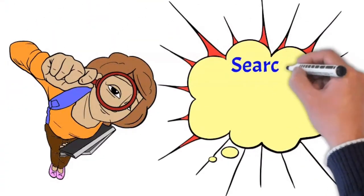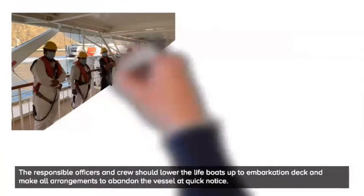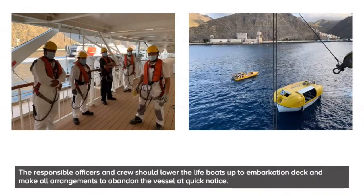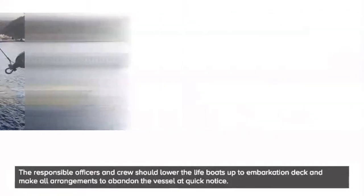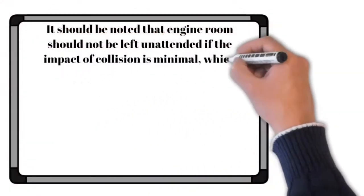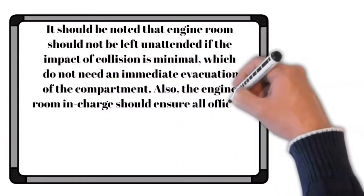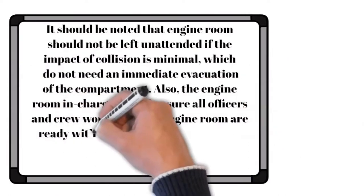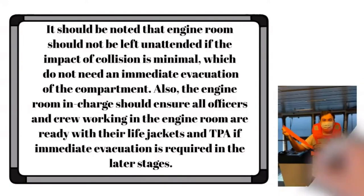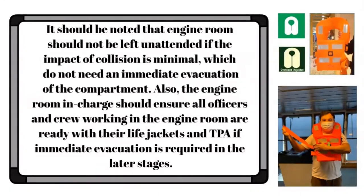Make arrangements to search and find the missing person. The responsible officers and crew should lower the lifeboats up to embarkation deck and make all arrangements to abandon the vessel at quick notice. It should be noted that engine room should not be left unattended if the impact of collision is minimal, which do not need an immediate evacuation of the compartment. Also, the engine room in charge should ensure all officers and crew working in the engine room are ready with their life jackets and TPA if immediate evacuation is required in the later stages.